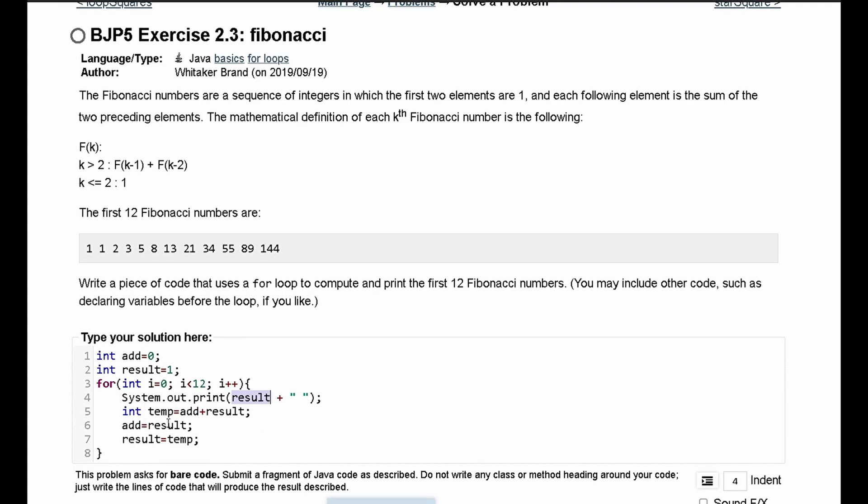And then we have int temp equals add plus result, so we have zero plus one, so one is stored in temp. Add is equal to result, result is one, so add is equal to one, and result is equal to temp which is one. So when we run through this, since result is still one, we are going to print out one again, which will give us this value.